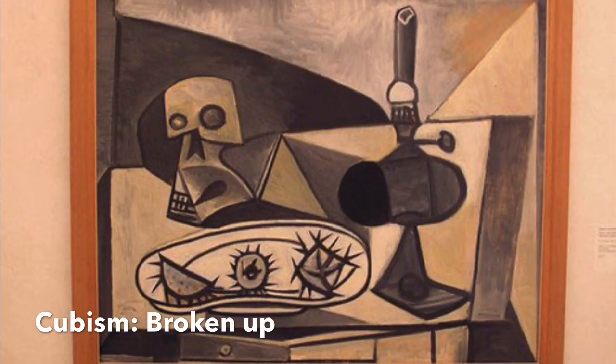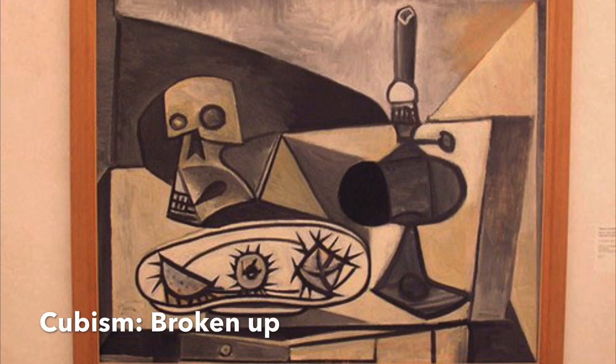Now the Cubist style can be described as kind of broken up looking. Artists looked at different parts of objects and when they put them back together they looked kind of abstract or maybe not realistic.